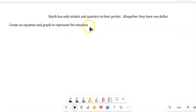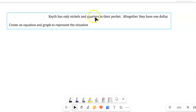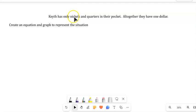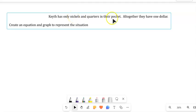Let's talk about some situations with general form. So here's a situation: Keith has only nickels and quarters in their pocket. Altogether, they have one dollar. So just a fistful of change or maybe a pocketful of change, maybe not even full. Nickels and quarters only, and they have one dollar altogether.